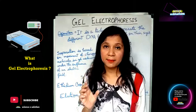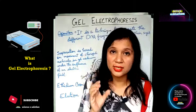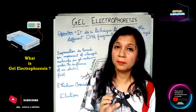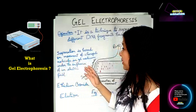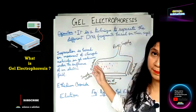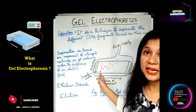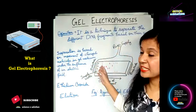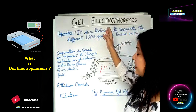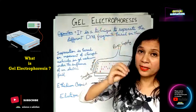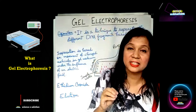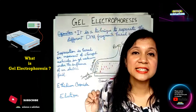We cut it out with the help of restriction enzymes. After cutting, we need to identify which is our desired DNA fragment — and we do that through gel electrophoresis. So with gel electrophoresis, we separate the DNA fragments, and the separation is based on their sizes.